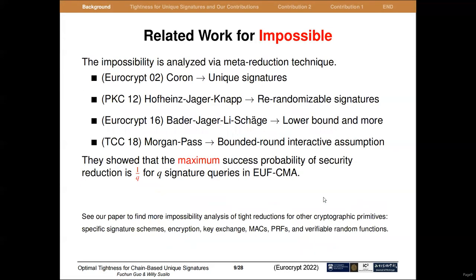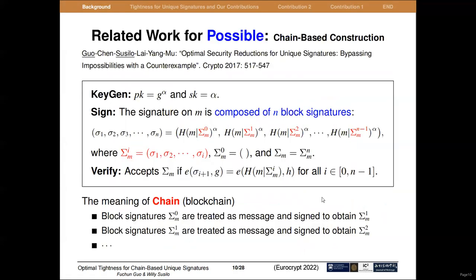There have been many excellent proofs with meta-reduction, showing that unique signatures or their generalizations cannot have success probability more than 1/Q in the standard security model. On the other hand, it is also possible to achieve tighter reductions, as the other co-authors showed in Crypto 2017. The proposed signature scheme is called chain-based construction.